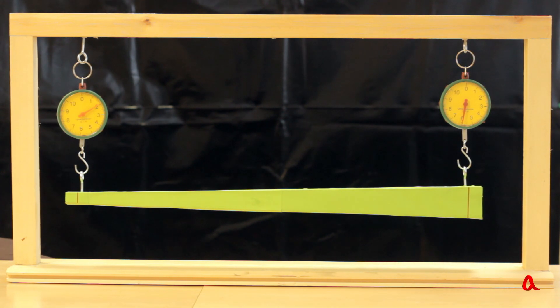To distribute the beam's weight between them evenly, they have to be holding it at the points equally distant from the gravity center. The dynamometer's readings have a 2 to 6, that is a 1 to 3 ratio.